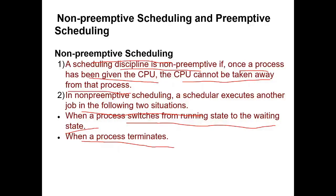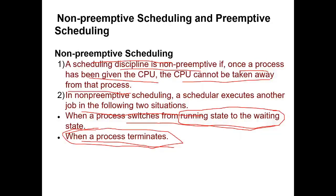In non-preemptive scheduling, the CPU is given to another process only in two situations: one, when the process moves from the running state to the waiting state — the CPU becomes free and is given to another process; two, when the process finishes its execution — the CPU is then given to another process.